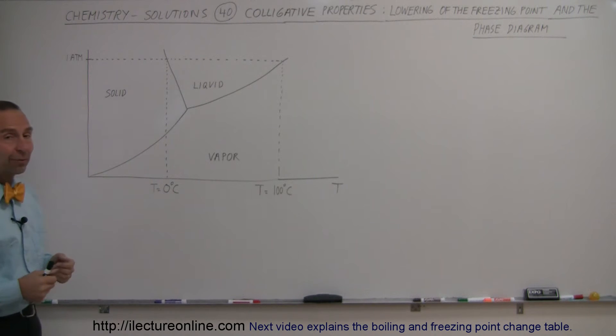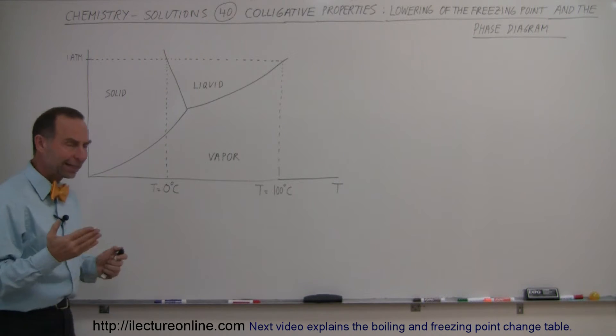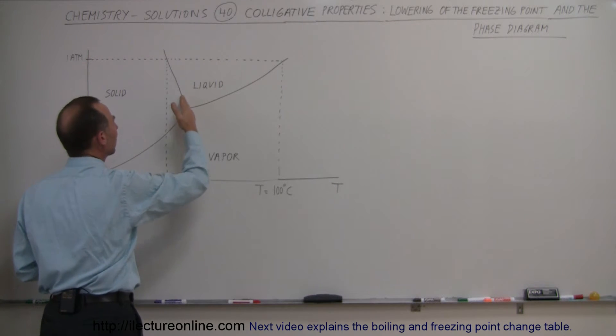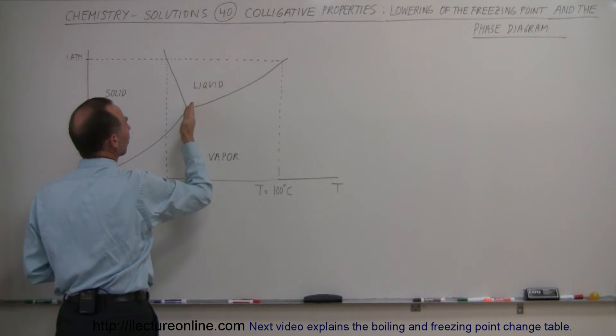So first of all, here's the typical phase diagram for water. Of course you recognize it's for water because the line right here actually has a negative slope rather than a positive slope.